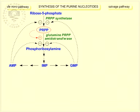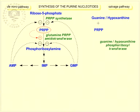An alternative pathway to synthesize purine nucleotides is the so-called salvage pathway. It consists of two reactions. In one of them, guanine as well as hypoxanthine interact with phosphoribosyl pyrophosphate, catalyzed by a phosphoribosyl transferase. One and the same enzyme catalyzes the conversion of guanine and hypoxanthine to the respective nucleotides.